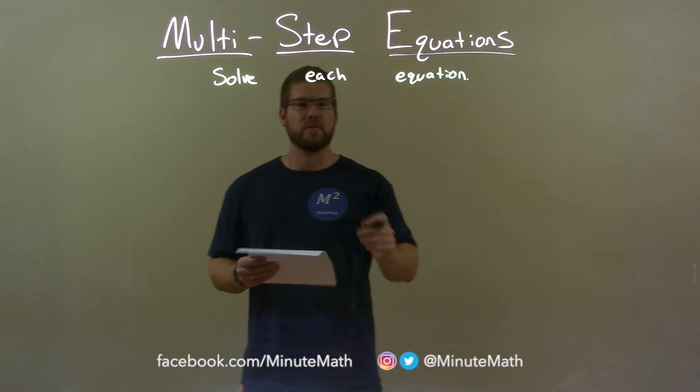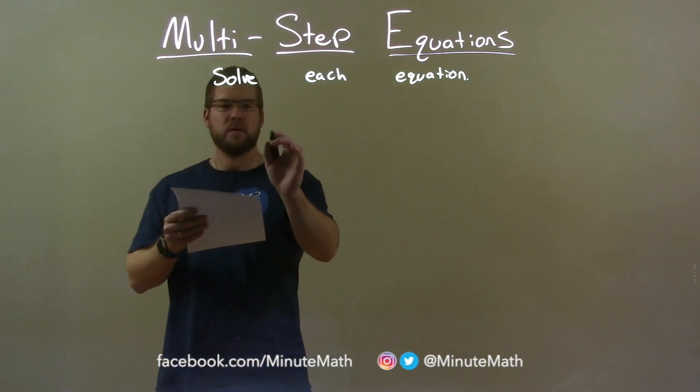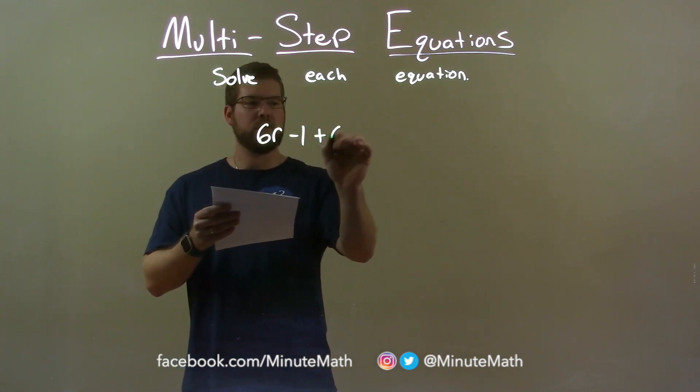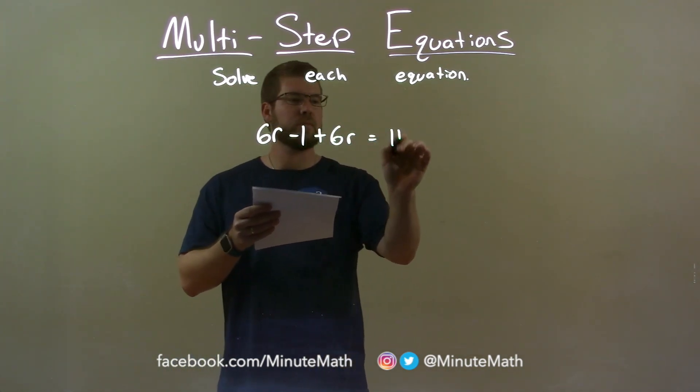Now, if I was given this equation, 6r minus 1 plus 6r equals 11.